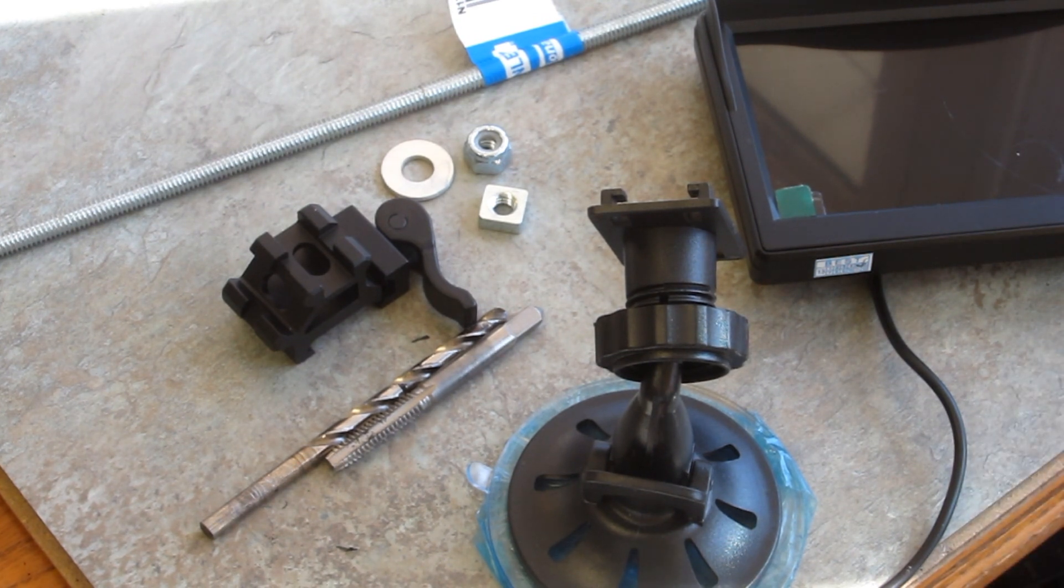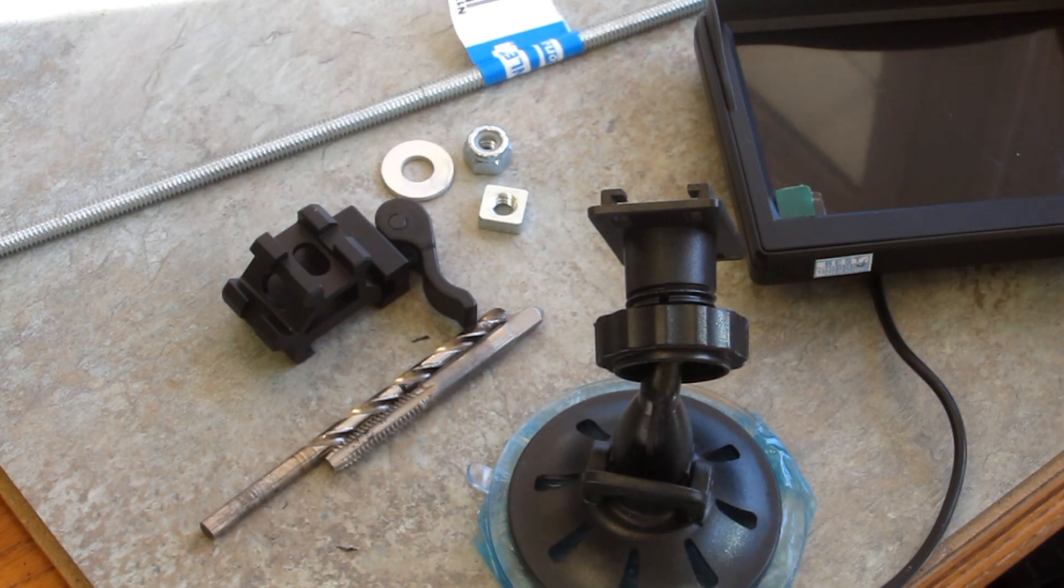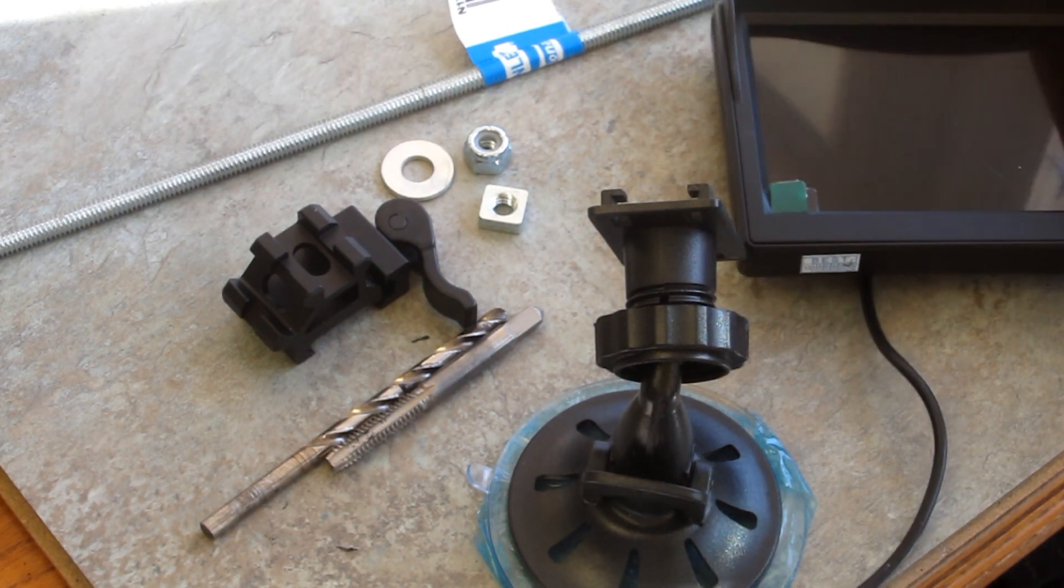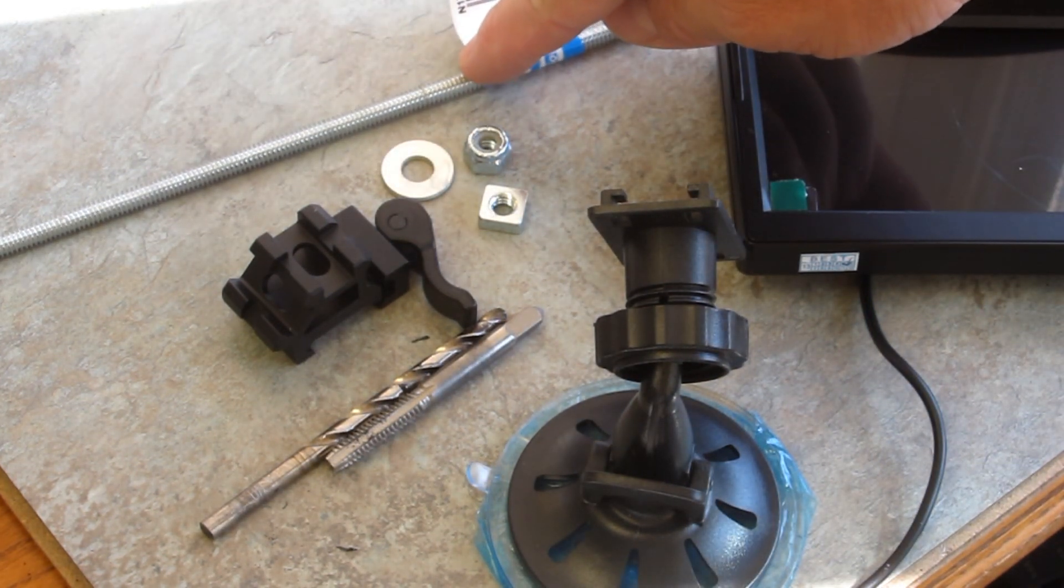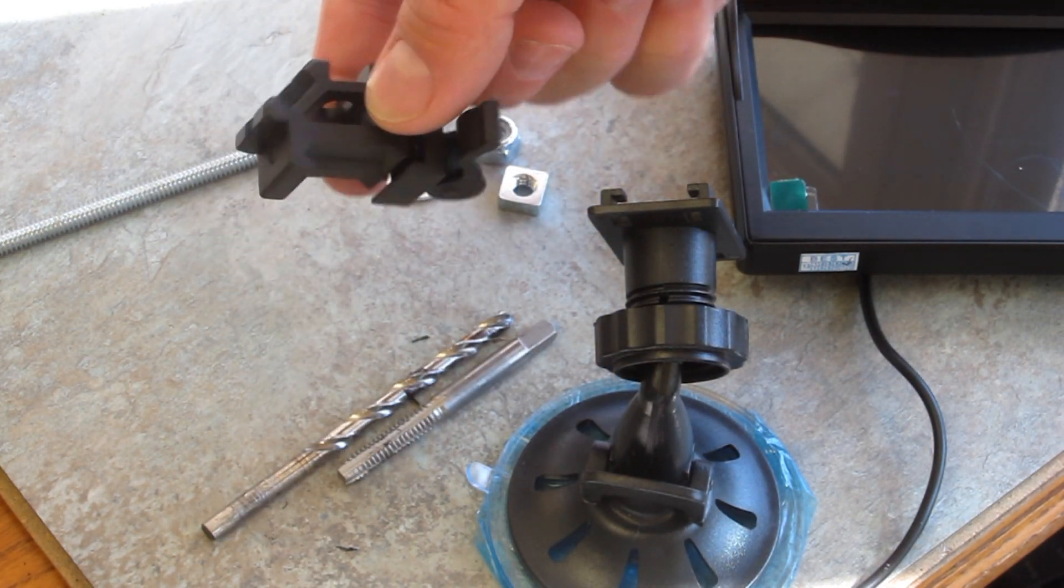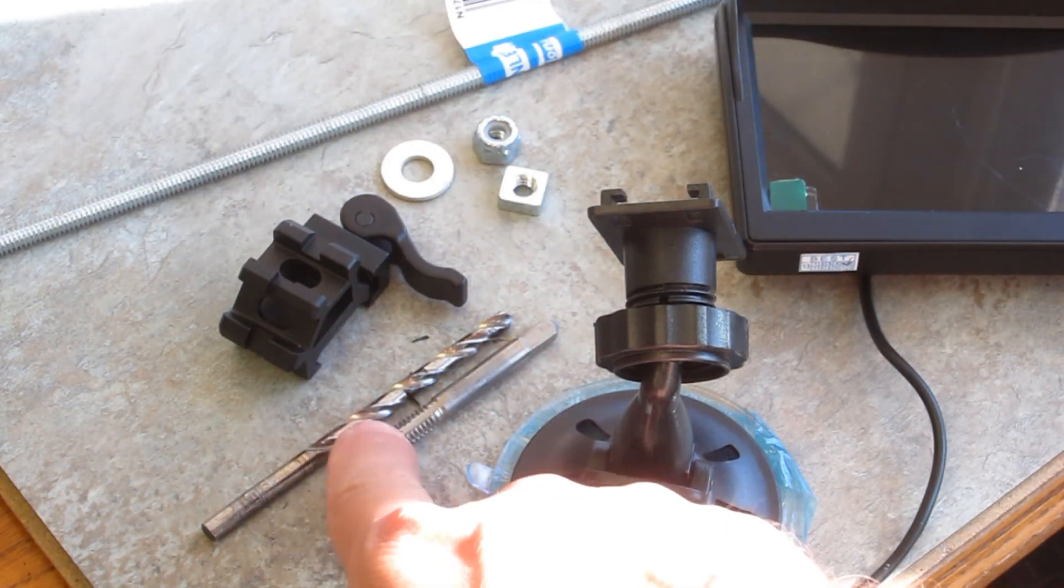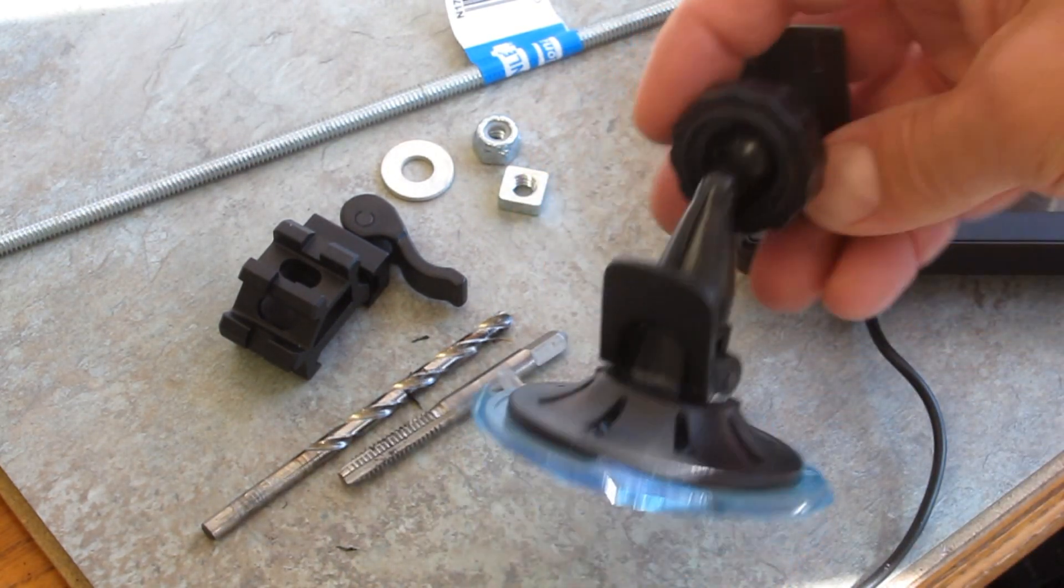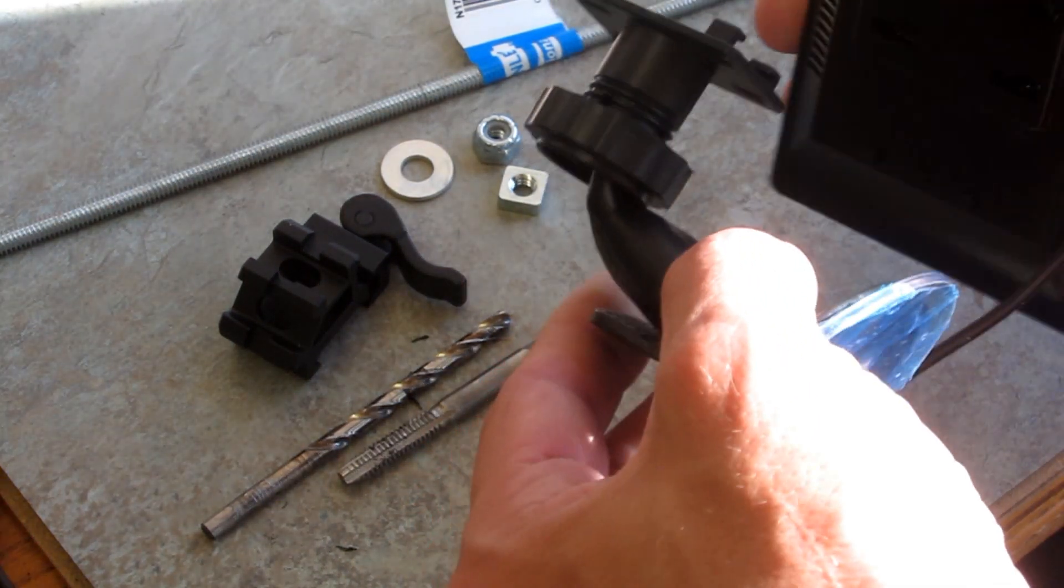Okay, let's start with the monitor mount for the 5-inch HD monitor. We got 1/4-20 threaded rod, lock nut, square nut, UTG-45 quick release, a drill and a 1/4-20 tap, and the mount that came with the monitor.